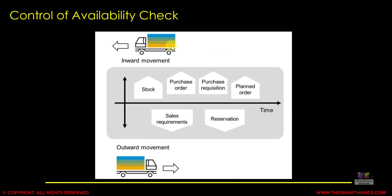When the system performs the availability check, the control depends on different inward and outward movements. From a materials management perspective, the system considers: current warehouse stock, any upcoming goods receipts for purchase orders, any purchase requisitions created for procurement of the same product, and any planned orders in the system. Planned orders can be converted to purchase requisitions or production orders. The system also considers outward movements, such as existing sales requirements or reservations.